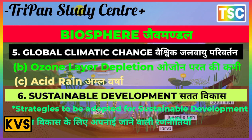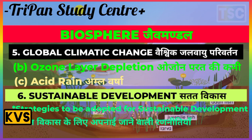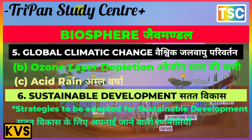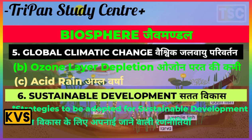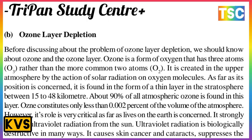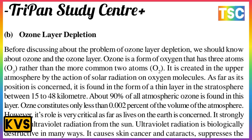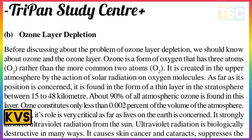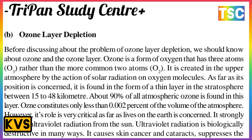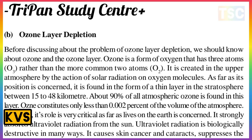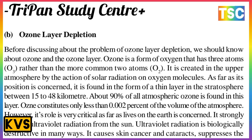The next topic is ozone layer depletion. Before discussing ozone layer depletion, we should know about ozone and the ozone layer. Ozone is a form of oxygen that has three atoms (O3), rather than the more common two atoms (O2). It is created in the upper atmosphere by the action of solar radiation on oxygen molecules.